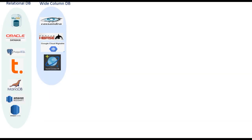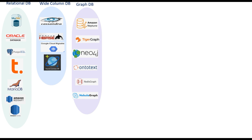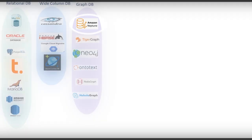Next up is graph database. Graph database is designed so that connections between the data are considered as important as the data itself. It also stores data flexibly in such a way that it is not restricted to a rigid existing model. The data structure it uses to store data is called a graph. Amazon Neptune is one such example; users can process financial and purchase transactions in near real-time, making it easy to spot fraud patterns.